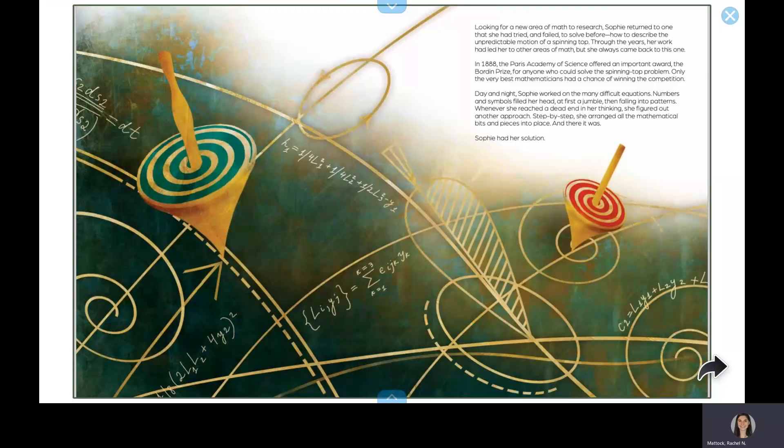In 1888, the Paris Academy of Science offered an important award, the Borden Prize, for anyone who could solve the spinning top problem. Only the very best mathematicians had a chance of winning the competition.